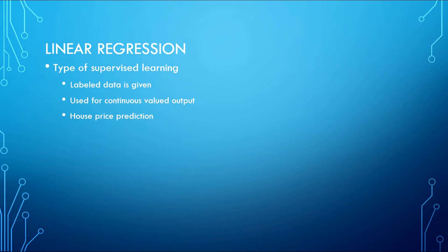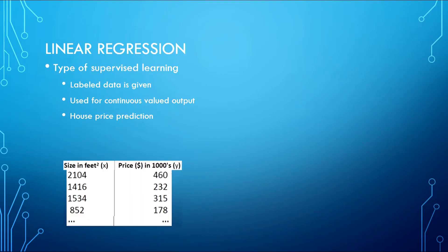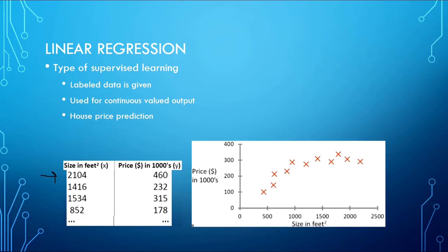For example, we have a problem where we want to predict the prices of different houses. We have a dataset like this where we have sizes of different houses and their prices. We can also visualize this data in a 2D plot, where each cross represents a data point or a row of this dataset.